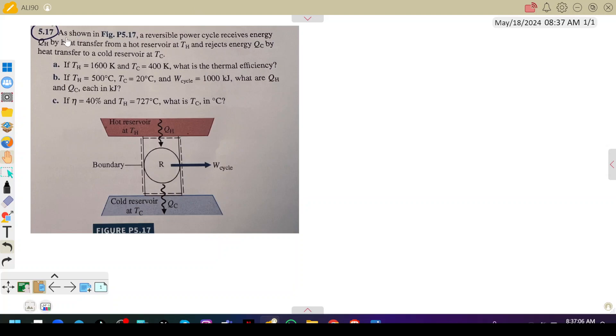All right, so we have this exercise as shown in Figure P5.17. A reversible power cycle receives energy Qh by heat transfer from a hot reservoir at Th and rejects energy Qc by heat transfer to a cold reservoir at Tc. The cycle delivers mechanical energy as work after receiving thermal energy Qh from the hot reservoir, and thermal energy Qc is lost to the cold reservoir.